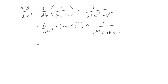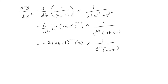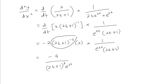Differentiating dy/dx using the power rule gives negative 2 times (2t plus 1) to the power of negative 2, then multiplying by 2 from differentiating inside the bracket. Multiplying with 1 over e^(2t) times (2t plus 1), we combine the (2t plus 1) terms to get (2t plus 1) to the power of 3. So d²y/dx² equals negative 4 over (2t plus 1)³ times e^(2t).